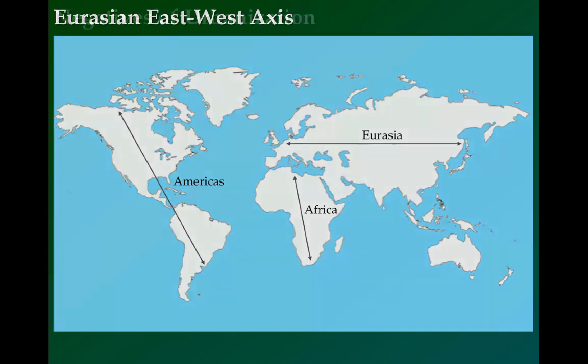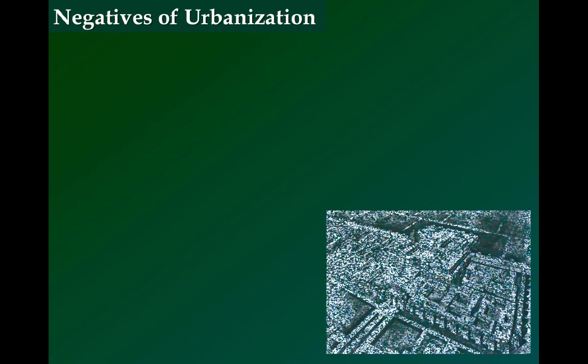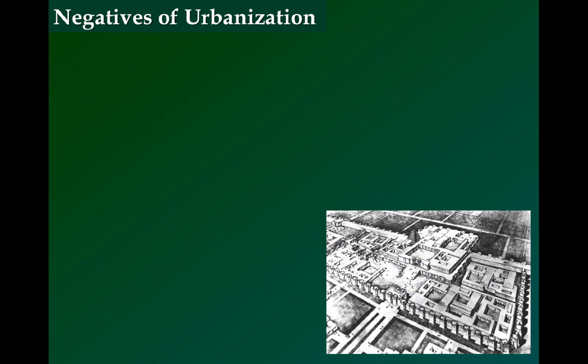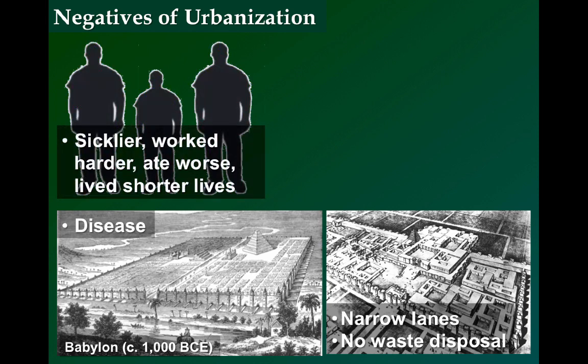There are plenty of negative characteristics associated with urbanization. While the city centers were decent and sometimes elaborate, most people lived meagerly in mud-bricked houses. The lanes between homes were usually very narrow, and waste disposal was often scant or non-existent. As a result, disease was rampant, keeping the urban populations relatively small. Remember that urban dwellers worked harder, had worse diets, and individually may have been worse off.